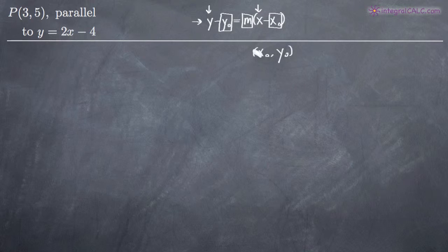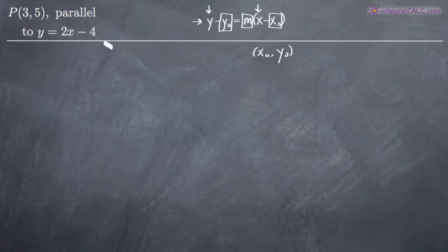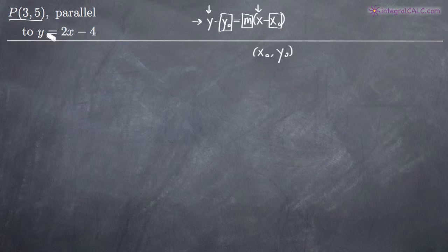So we need the slope and a point. In this particular problem, we've been given the point and we've been told that the line we're looking for is parallel to the line y equals 2x minus 4. We need a slope and a point. We've already got the point — we know it's (3, 5), so we're good there. And we need a slope, but all we've been told is that the line is parallel to y equals 2x minus 4.